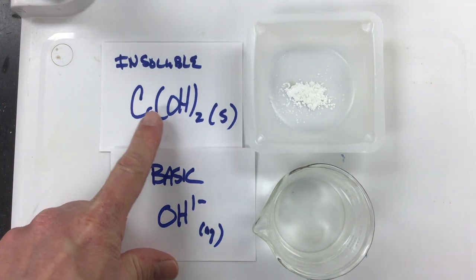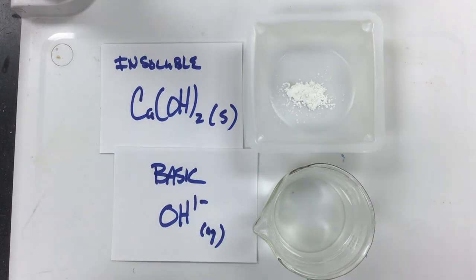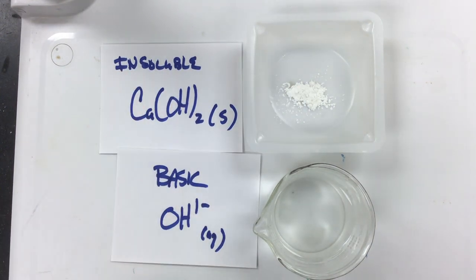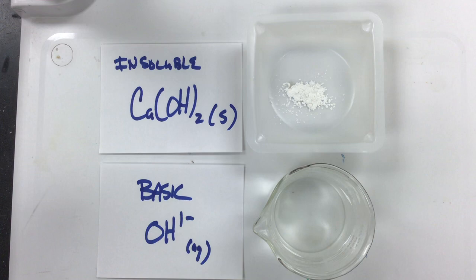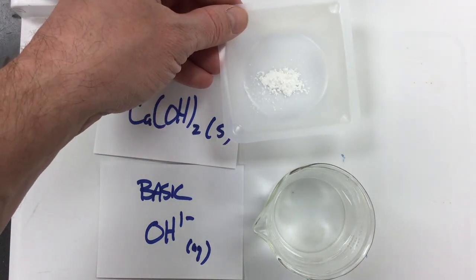So calcium hydroxide is Ca(OH)2, and it's a solid white powder as you can see here. It is insoluble, which is why we're trying to get a KSP value for it. Remember that if you have a soluble substance you can't get a KSP value for it. It doesn't work. It only works for insoluble substances.